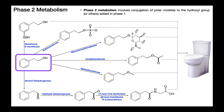In phase two metabolism, we take the hydroxylated molecule and conjugate other polar moieties to that hydroxyl group added in phase one. There's a variety of reactions that can occur. For example, a sulfotransferase reaction transfers a sulfate onto that oxygen. A glucuronosyl transferase attaches a carbohydrate moiety, also polar, onto that oxygen. There are also acetyltransferase and methyltransferase reactions — the acetyltransferase transfers an acetyl group, and a methyltransferase can transfer a methyl group onto that oxygen.